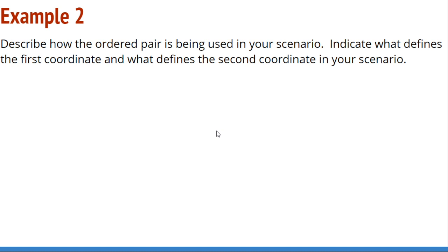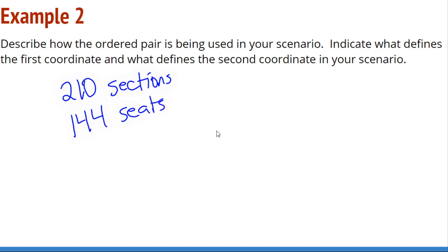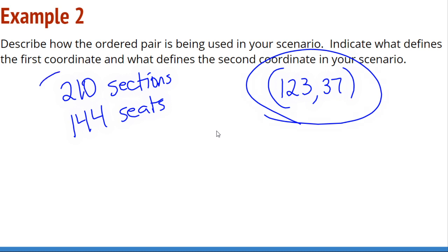Example number two: describe how the ordered pair is being used in your scenario. Indicate what defines the first coordinate and what defines the second coordinate. In the classroom, you would be given a set of scenarios to work on with a partner. For example, there is a football stadium that has 210 sections and 144 seats in each section. When you go to the game, your ticket says 123, 37. What could this mean about where you're sitting at the game?